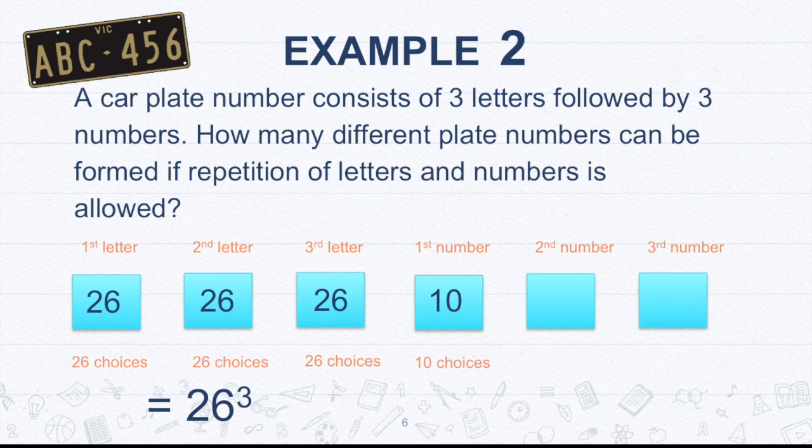Now moving on to the next, which would be the three numbers. So first number is 10. Why 10? Because we have 10 digits: zero, one, two, three, four, five, six, seven, eight, nine. So we have 10 choices.